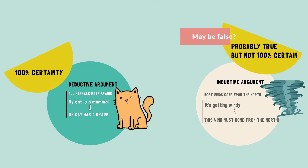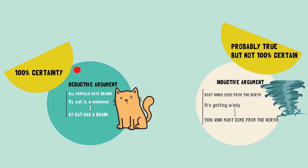Know the difference between the two. In deductive reasoning, we can be 100% sure that the conclusion is true based on the premises. While in inductive reasoning, there is a degree of probability that the conclusion is true, but it could also be false. In the inductive wind example, since most — not all — winds come from the north, we cannot conclude with certainty that the current wind comes from the north. It's only probable. To learn more about deductive and inductive arguments, watch our video on this topic.